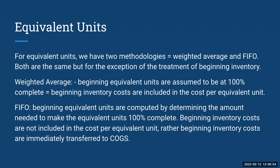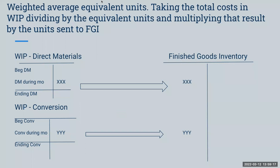Process costing is by far one of the more challenging subjects for many students, but we're going to go through plenty of examples. Under weighted average, I take the total costs of my work in process and divide by my equivalent units to get a cost per equivalent unit. I then take my completed units, multiply by the cost per equivalent unit, and that amount is transferred over to finished goods inventory. I also do the same for my conversion costs — direct labor and factory overhead — which are what we need to convert direct materials into a finished product.